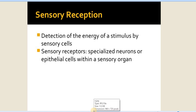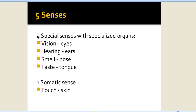There are sensory receptors involving detection of energy of a stimulus by sensory cells. Sensory receptors are specialized neurons or epithelial cells within the sensory organ — like the eye, nose, ear, tongue — or the fifth, somatic sense, which is touch. So there are five senses: four facial senses — vision by eyes, hearing by ears, smell by nose, taste by tongue — and the somatic sense, touch by skin.